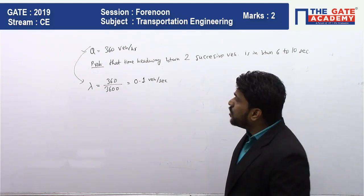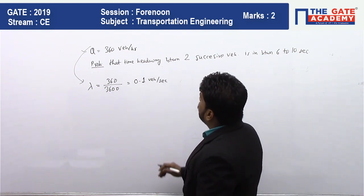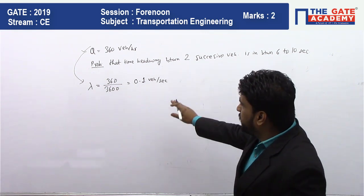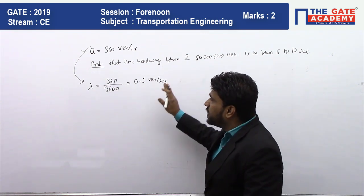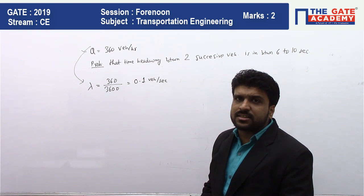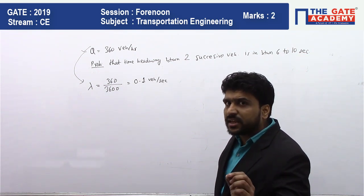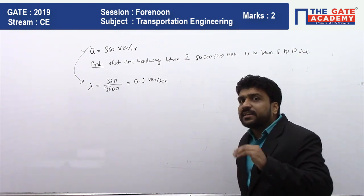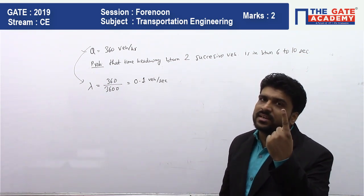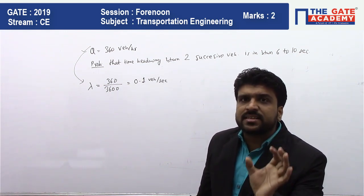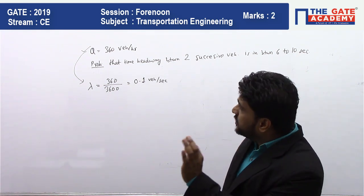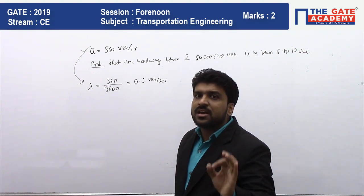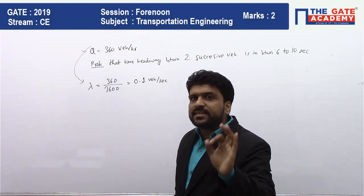Lambda = 0.1 means that in 1 second, 0.1 vehicles are arriving, which means in 10 seconds, one vehicle is coming. This is the basic arrival rate — on average, one vehicle arrives every 10 seconds.